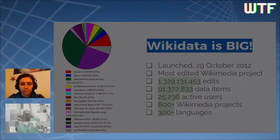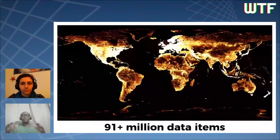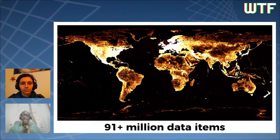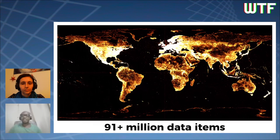So far, people and bots have made more than 1.3 billion edits to Wikidata and created more than 91 million items. The map shown here is a visual impression of geolocated items currently existing on Wikidata — the bright areas are items that have a coordinates location property added as a statement.